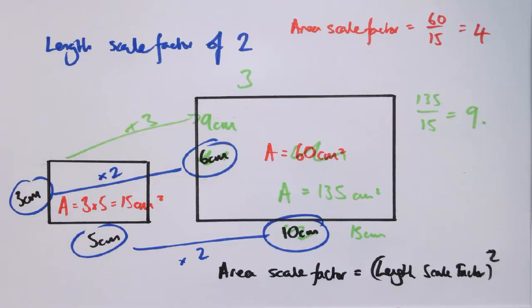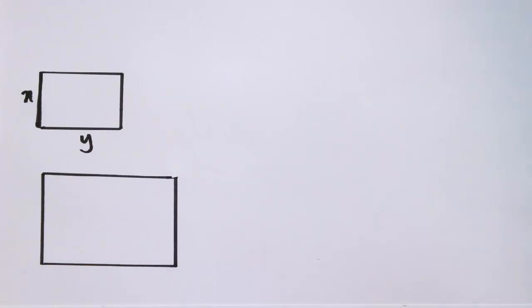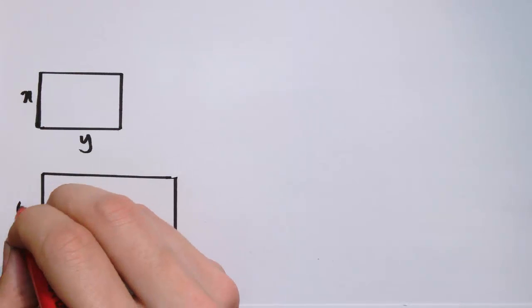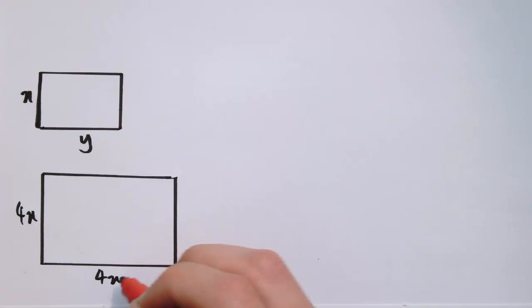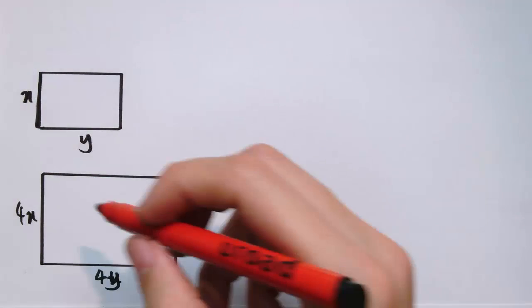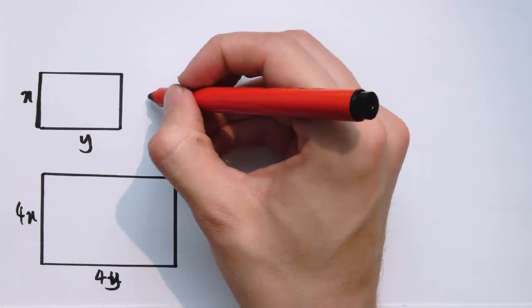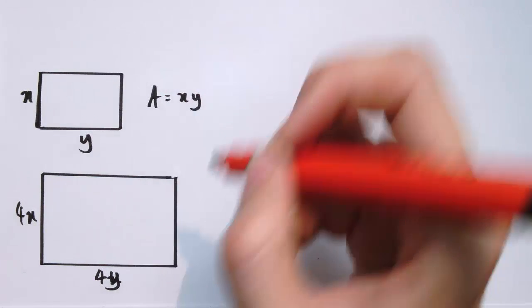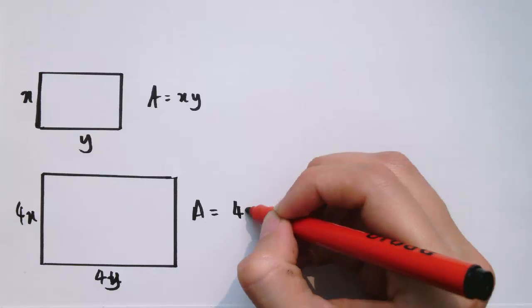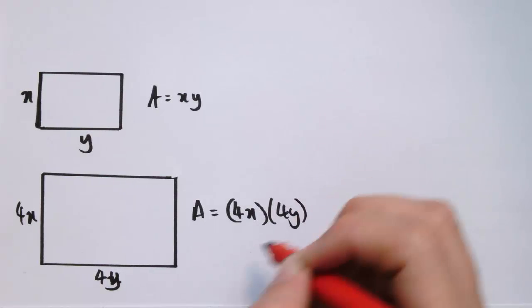And this makes sense if you think about it. If I had a rectangle that's x by y and I just scale it up by a particular number, so it's a scale factor of 4, I end up with 4x and 4y as the lengths instead. The area of this one would be x times y, and the area of this one would be 4x times 4y.